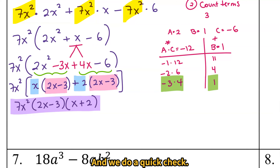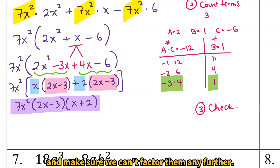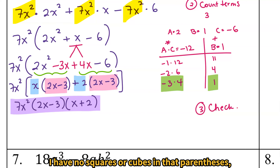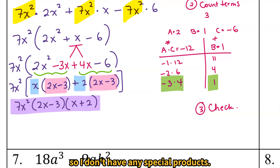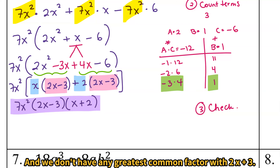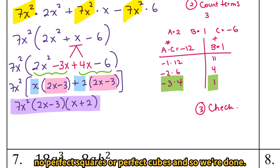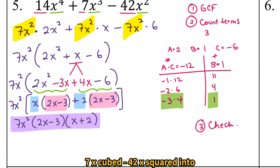Our answer is 7x squared times 2x minus 3 times x plus 2. We do a quick check — the third step is to check the factors and make sure we can't factor them any further. Looking at 2x minus 3: no perfect squares or cubes, and no greatest common factor between 2x and 3. Same for x plus 2. So we're done: 14x to the fourth plus 7x cubed minus 42x squared factors into 7x squared times 2x minus 3 times x plus 2.